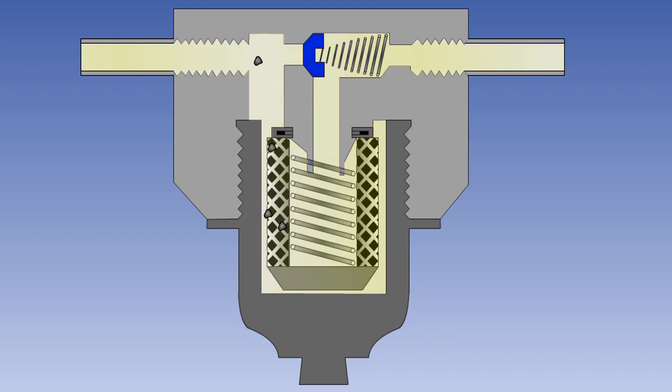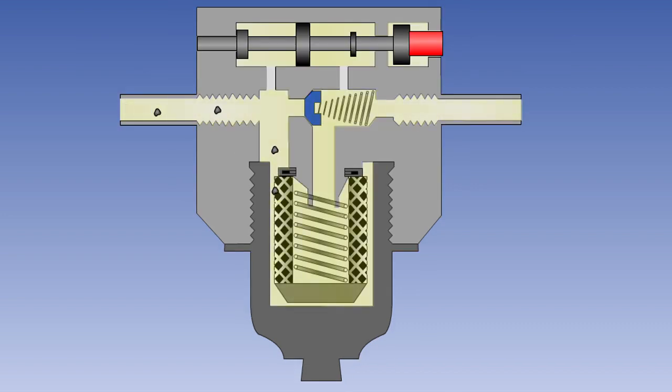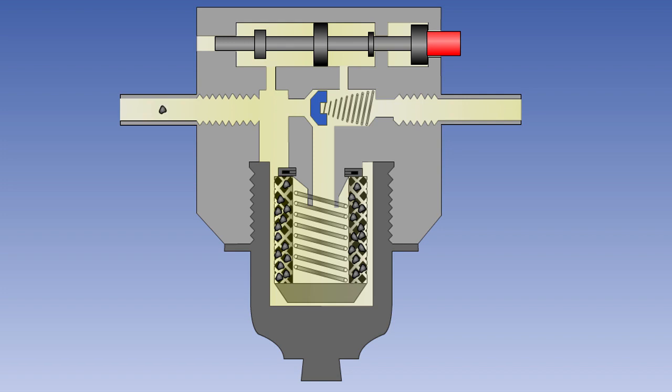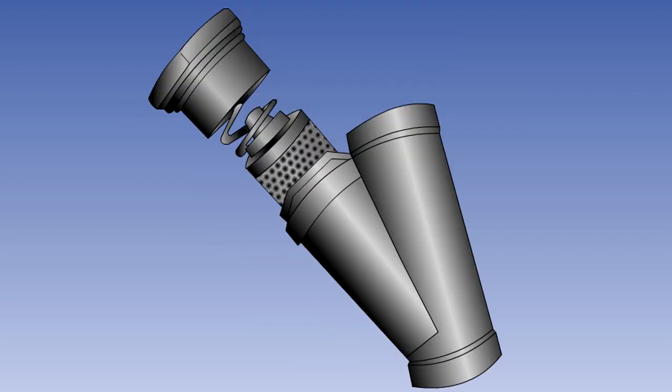Other filters are fitted with a relief or bypass valve, which allows unfiltered fluid to pass to the system when the element becomes clogged. In this type of filter, the element must be changed at regular intervals, before clogging occurs. Some filters combine both systems, with the warning indicator set to operate shortly before the bypass valve opens. Individual components often have a small filter fitted to their inlet connection, and constant pressure pumps will have a K-strain filter to help monitor pump condition.